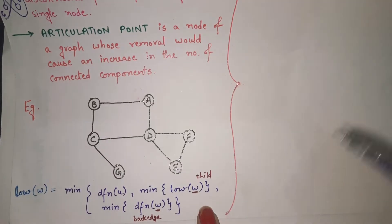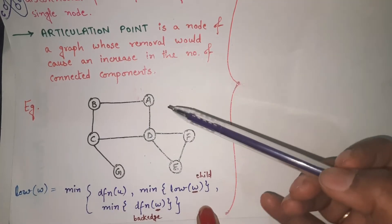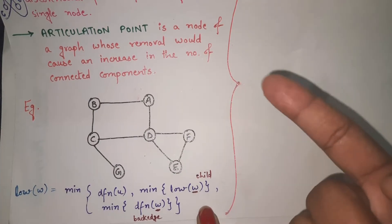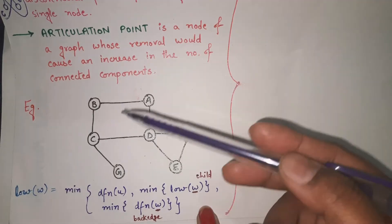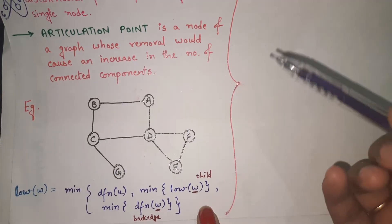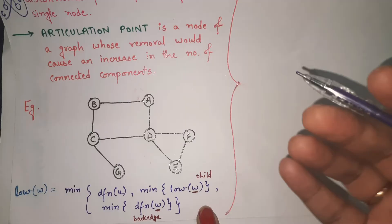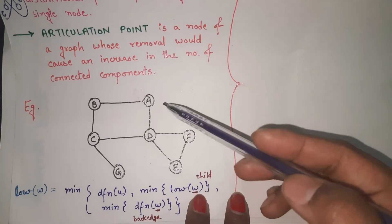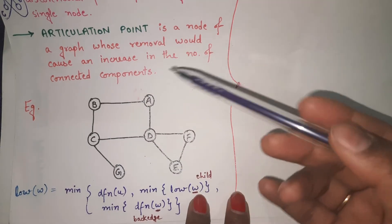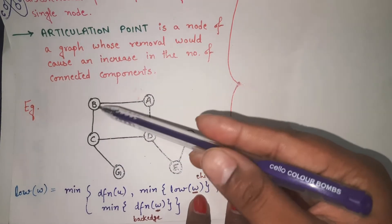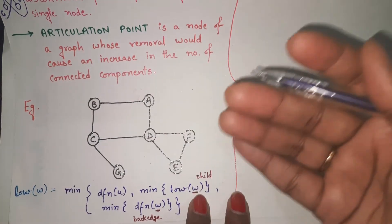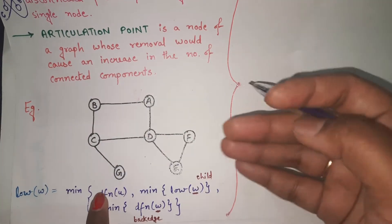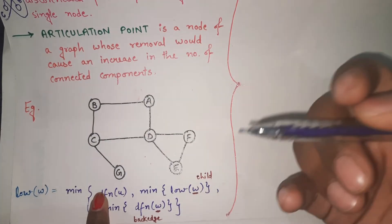Step number one: from the given graph you have to construct a tree. There can be various ways, but the common way we will use is the DFS method. Write down the numbers in the nodes in the order in which they are being traversed. You can start with any node, but it is mostly recommended to start from a leaf node — one that is connected with fewer nodes.